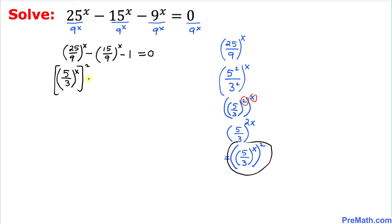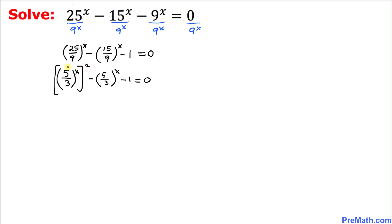For the second term, 15 over 9 reduces to 5/3, so we have (5/3)^x. The equation becomes (5/3)^(2x) minus (5/3)^x minus 1 equals 0. The expression (5/3)^x appearing twice gives us a strong clue to use a substitution method.